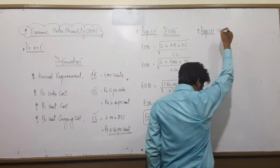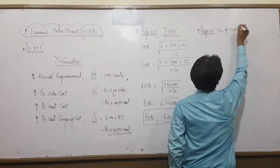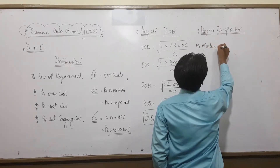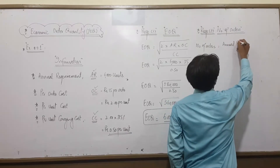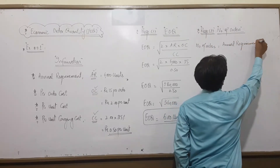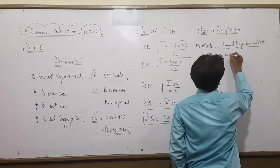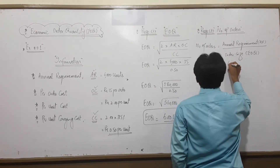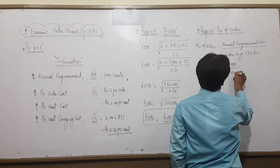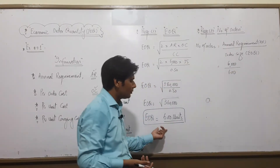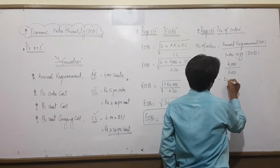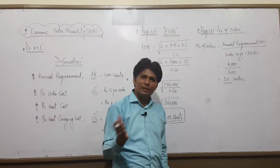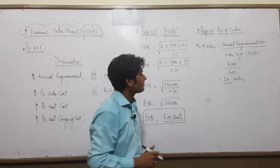Requirement 2: Number of Orders. Number of orders = Annual Requirement ÷ Order Size = 6000 ÷ 600 = 10 orders. This means you need to place 10 orders per year — ordering 10 times with 600 units each time fulfills the annual requirement of 6000 units.